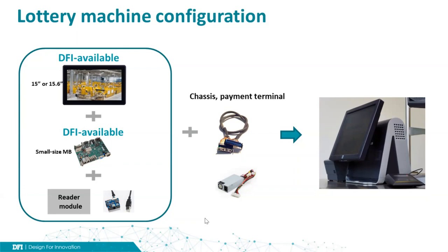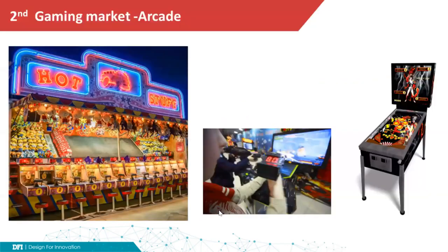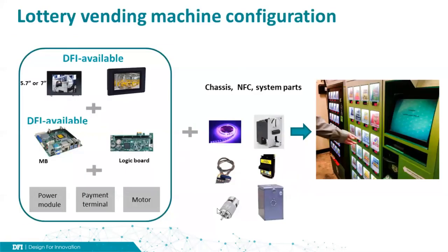When the three key modules are all installed together in a chassis and all connected by cables with the other parts, like the power supply and the payment terminals, it turns into a lottery post machine.